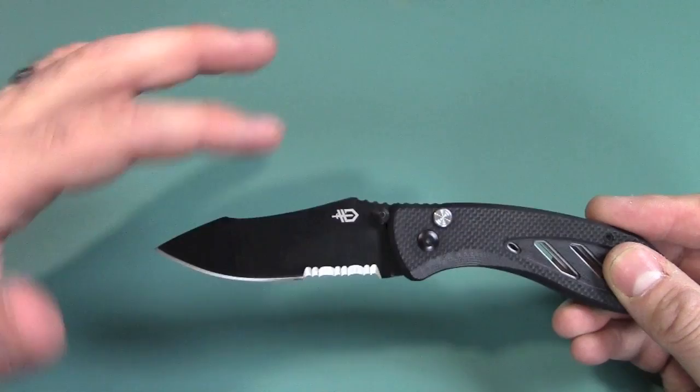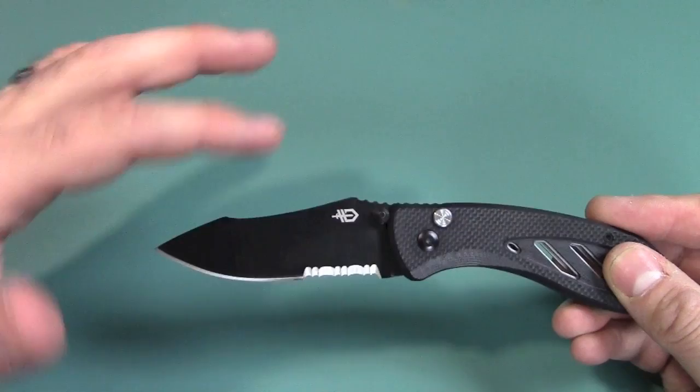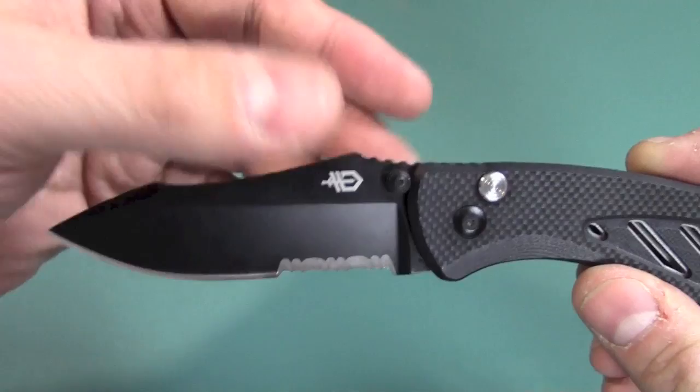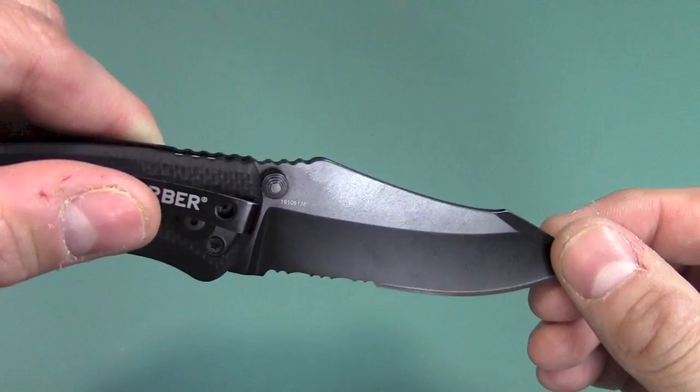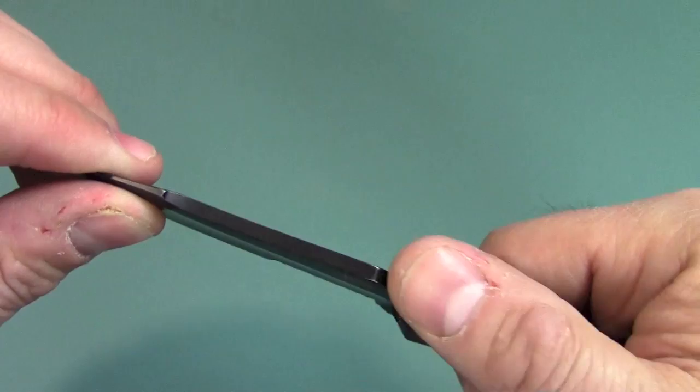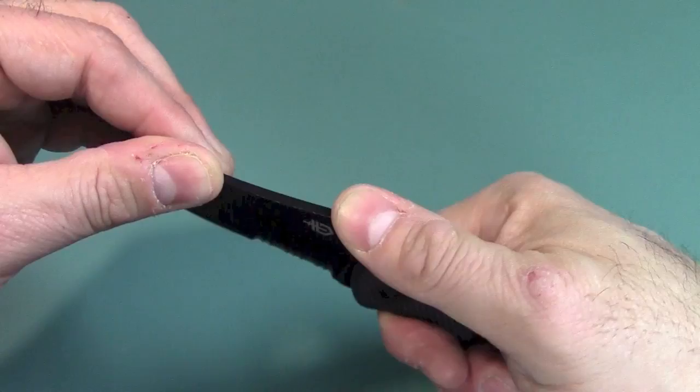The blade is a modified clip point. It's partially serrated. I believe that is the only choice you have with this blade. It has a black coating. I cannot find anywhere on the internet on Gerber or anywhere else what type of finish this is. You can see their dual thumb studs there. There's some nice jimping there that's pretty functional. You have sort of a thumb ramp here, so it makes it really good. It's very hard for your hand to slip down on that blade.